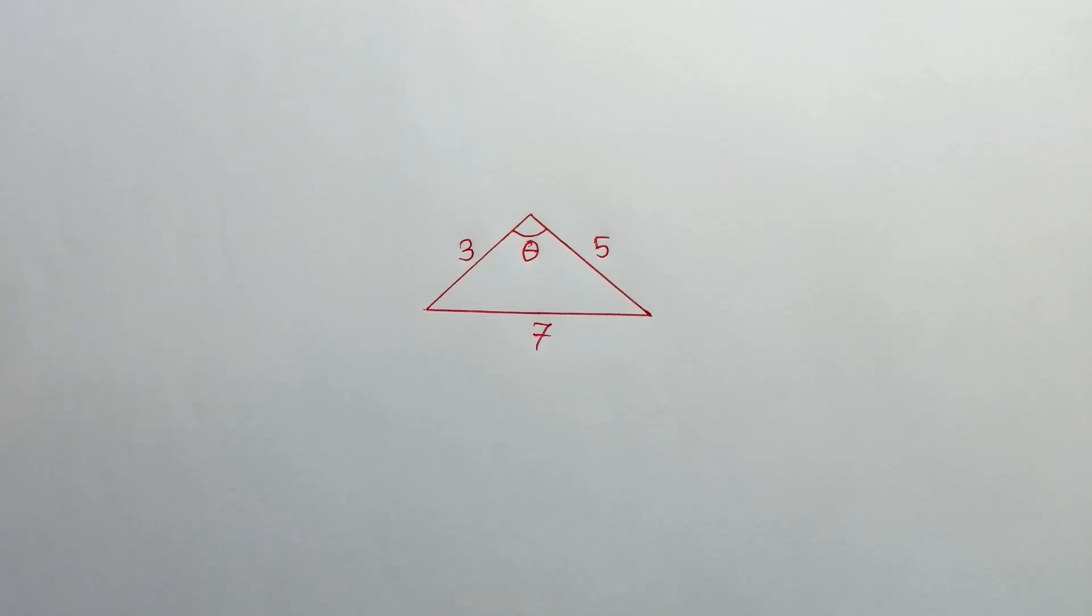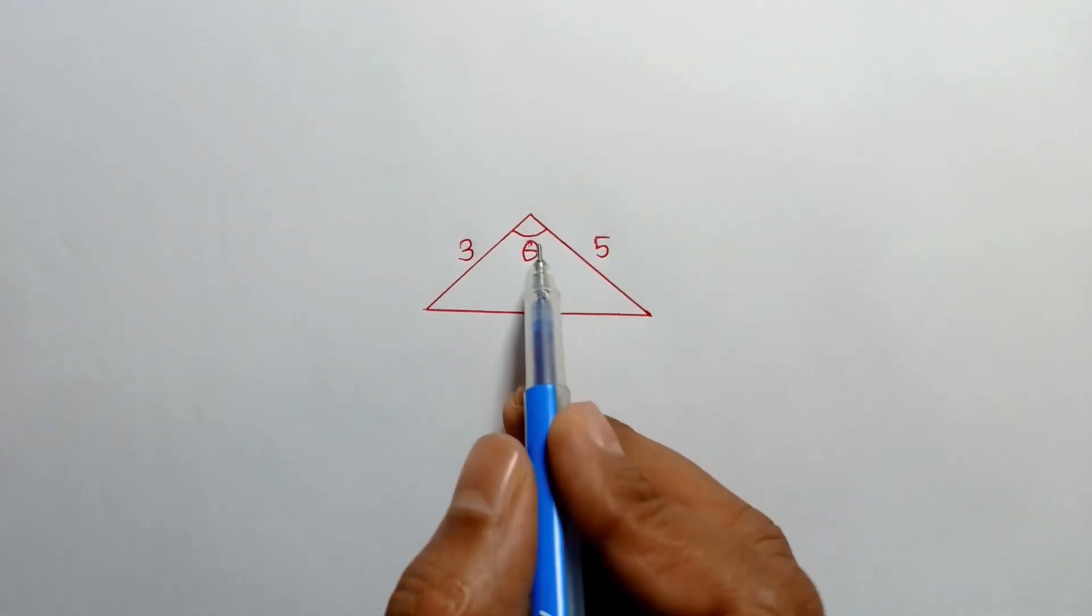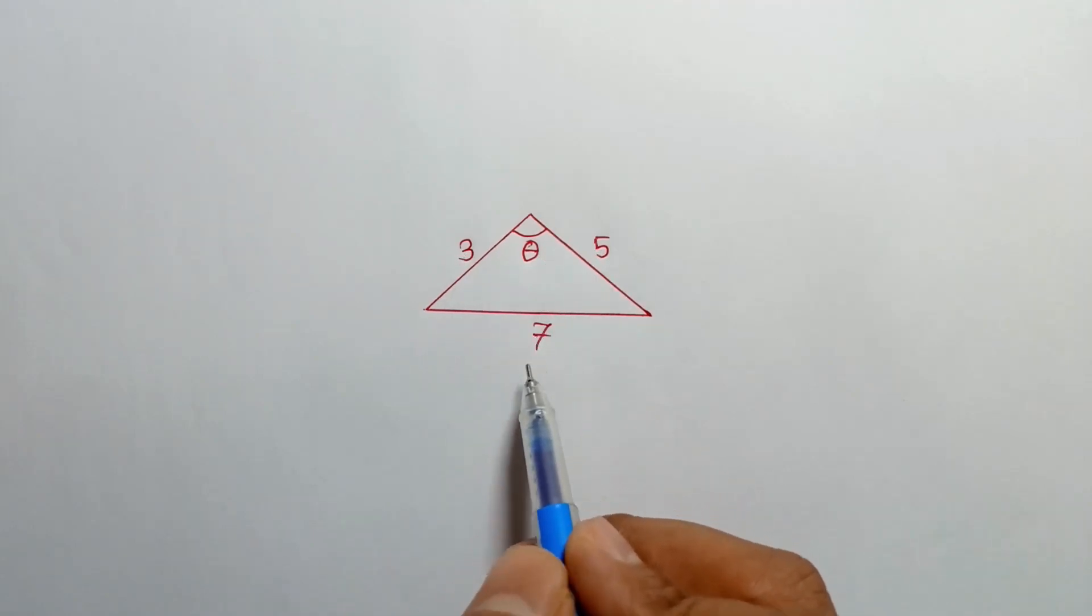Hi everyone, in this video I am going to show how to find the value of this angle theta from this triangle which sides are 3, 5 and 7 units.